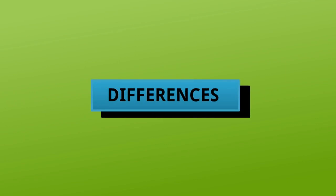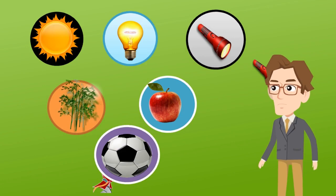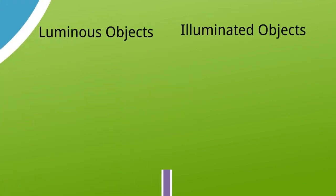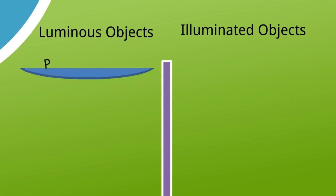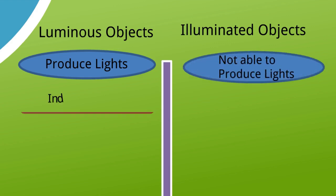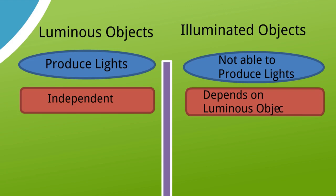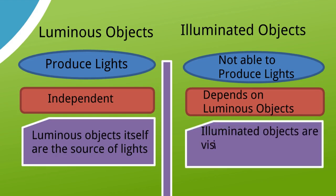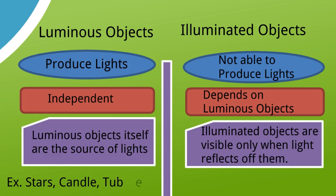Sometimes we confuse objects — Sun or bulb or torch versus plants, apple, or football. Don't be confused; we can easily categorize luminous and illuminated objects. Luminous objects produce light; illuminated objects cannot produce light. Luminous objects are independent; illuminated objects depend on luminous objects. Luminous objects are themselves the source of light; illuminated objects are visible only when light reflects off them. Examples of luminous objects: stars, candles, tube lights.